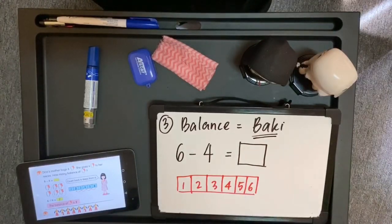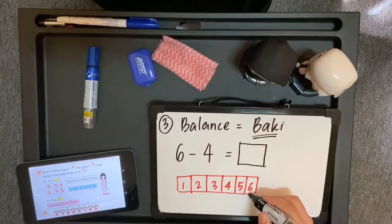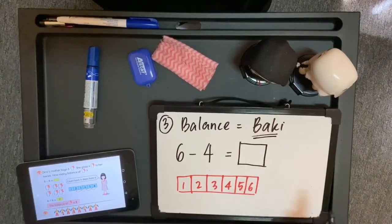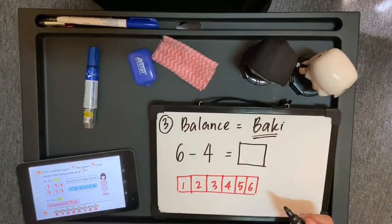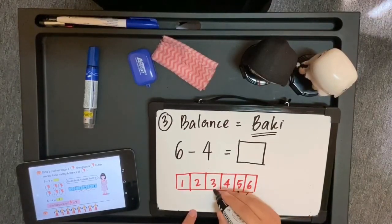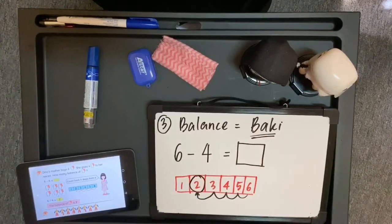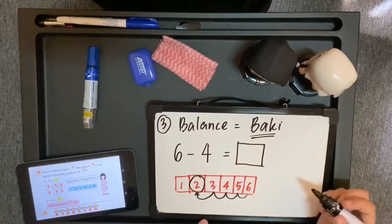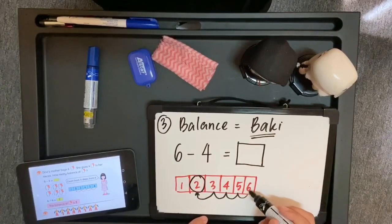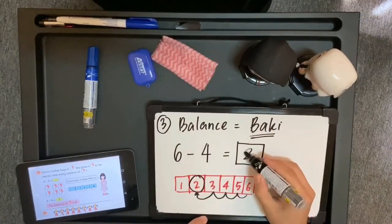Boleh buat dalam bentuk garis nombor juga — timeline. Daripada 6, beri 4. Jadi, gerakkan ke kiri 4. Kenapa ke kiri? Sebab kita menolak. Jadi, nombor perlu dikurangkan: 1, 2, 3, 4. Berhenti nombor 2. Jadi, berapa baki yang tinggal? 6 tolak 4. Jawapan dia adalah 2.